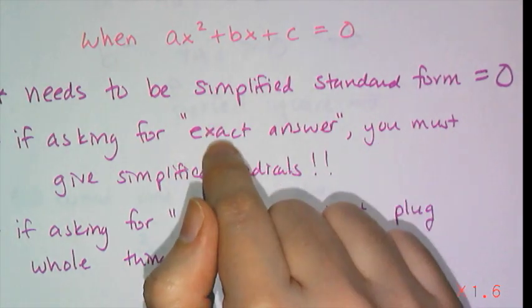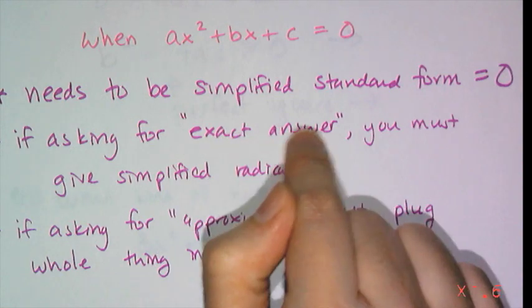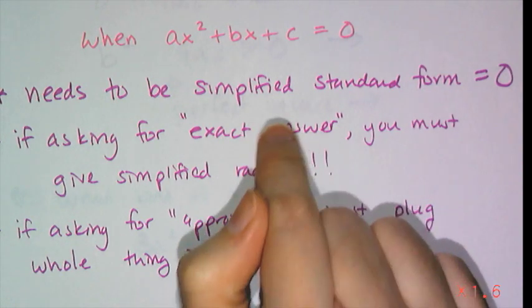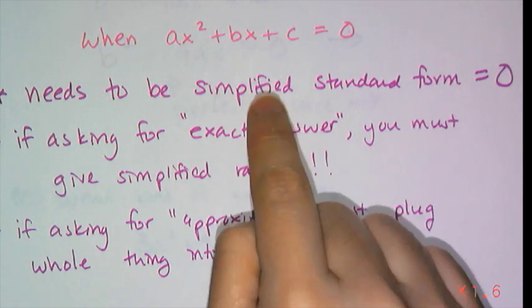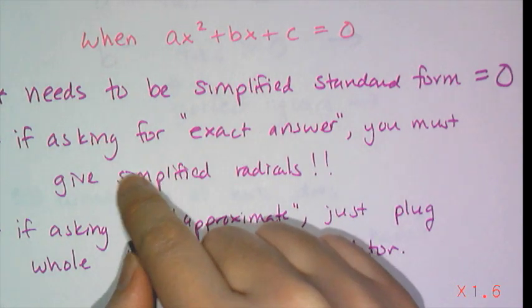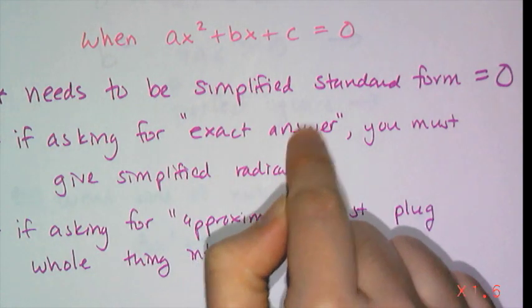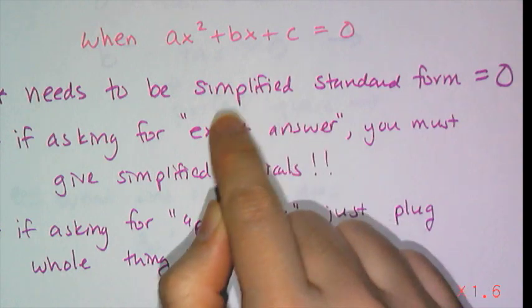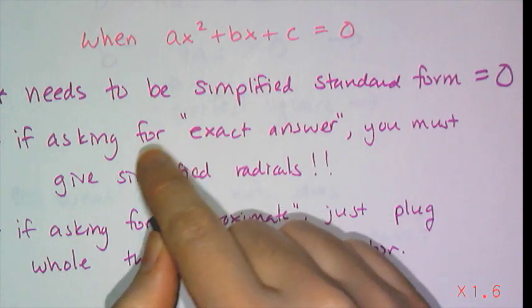Now if I am asking you to give me an exact answer, you have to give me an exact answer, and sometimes that means you have to give me simplified radicals, and that's where all the annoyance comes in with the quadratic formulas, having to simplify your answer.